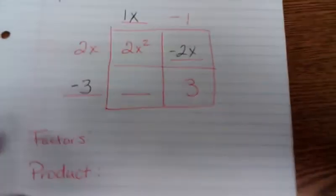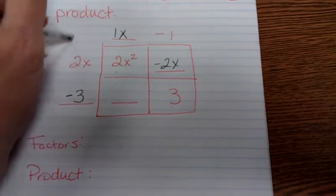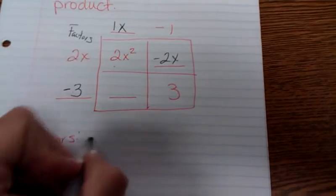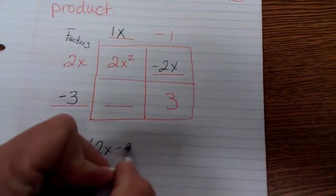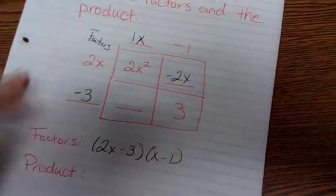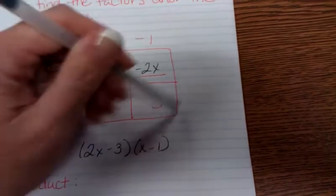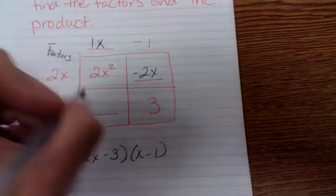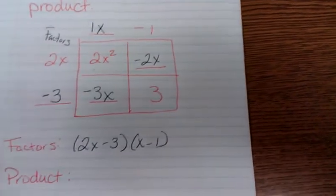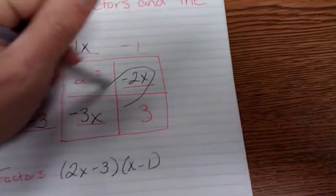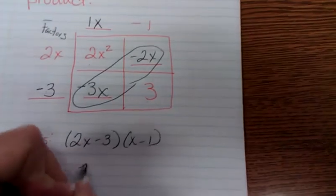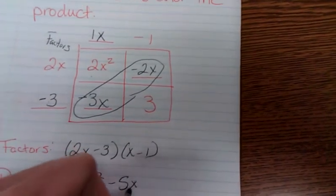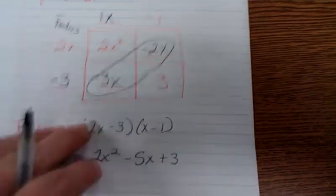Now it asks me to write the factors in the product. The factors are what's outside. So for the factors, I would write 2x minus 3 times x minus 1. The product is all of what's inside of here. Oh, I left an empty space here. x times negative 3 is negative 3x. So to find my product, remember these two squares go together. I get 2x squared minus 5x plus 3. And that's your answer.